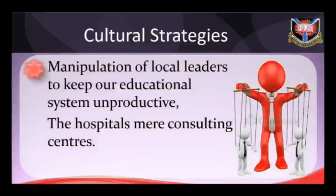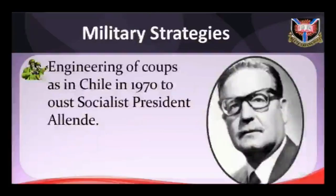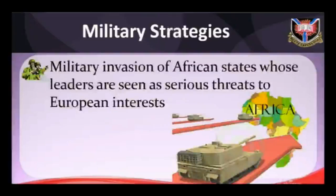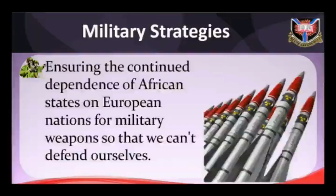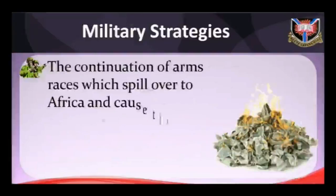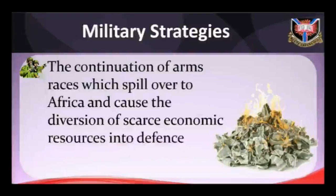Military strategies adopted by colonial masters include: A — engineering of coups, as in Chile in 1970, to oust socialist President Allende. B — military invasion of African states whose leaders are seen as serious threats to European interests, e.g., the Portuguese invasion of Guinea-Bissau in 1970 and America's bombardment of Libya in 1986. C — ensuring the continued dependence of African states on European nations for military weapons so that they cannot defend themselves. D — the continuation of the arms race, which spills over to Africa and causes diversion of scarce economic resources into defense, while starving health, education and agriculture.